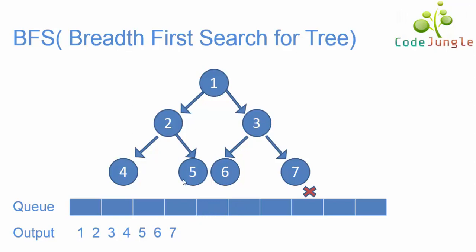The queue is now empty and we get the final output. The tree has been fully traversed using the BFS algorithm.